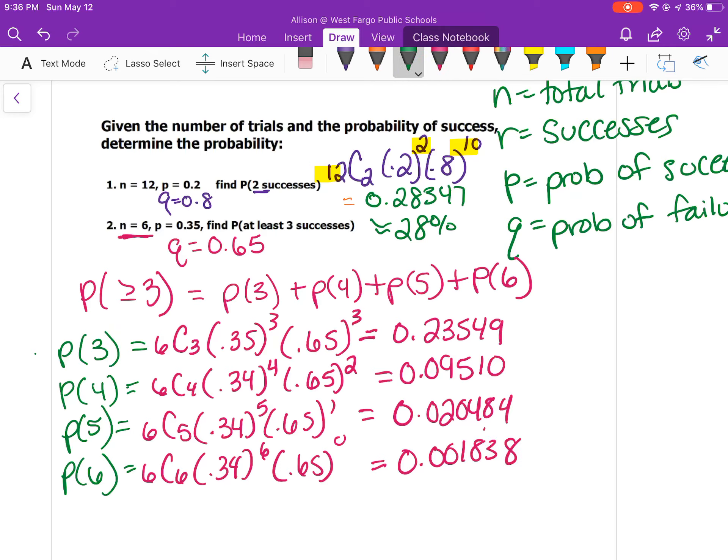To find the total probability of at least 3, you add sum the total. I got 0.352912, or approximately 35.3%.